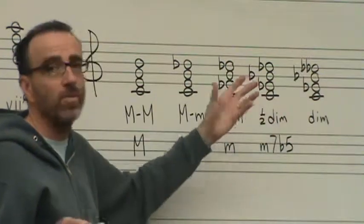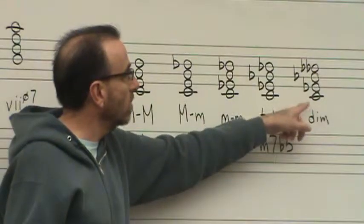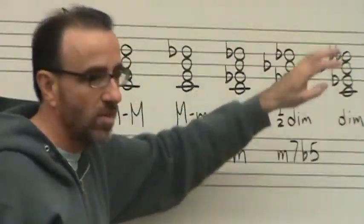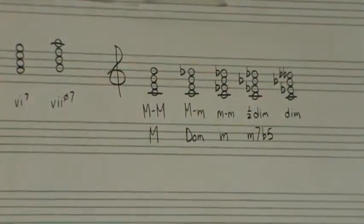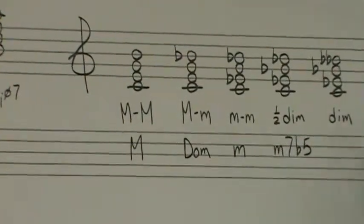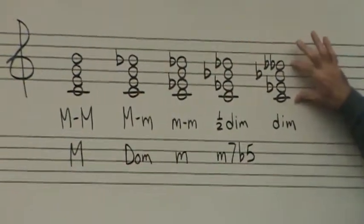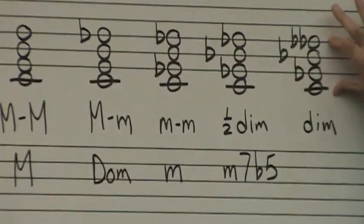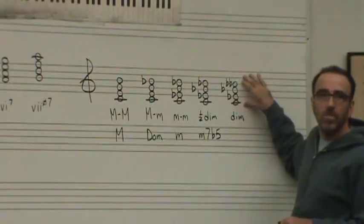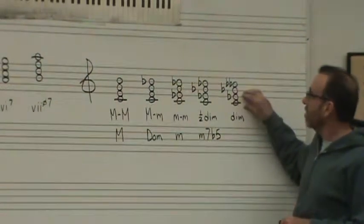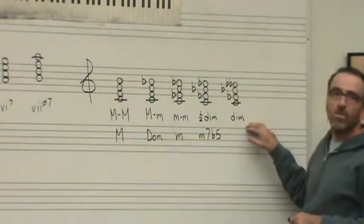Only half of it is diminished, as opposed to the fully diminished seventh chord where both the triad and the seventh are diminished. So the triad C, E flat, G flat is a diminished triad, and then C to B double flat is a diminished seventh. That's what we call a fully diminished seventh chord — the triad is diminished, the seventh is diminished — and we just call it a diminished seventh chord.